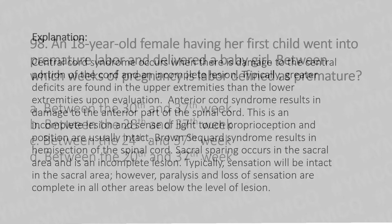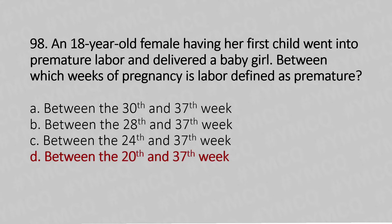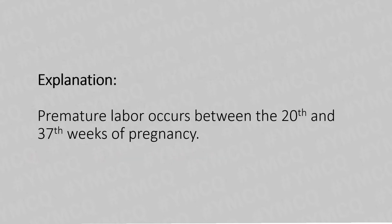Now let's move to our 98th question. An 18-year-old female having her first child went into premature labor and delivered a baby girl. Between which week of pregnancy is labor defined as premature? Option A: between the 36th and 37th week. Option B: between the 28th and 37th week. Option C: between the 24th and 37th week. Option D: between the 28th and 37th week. The answer is Option D — premature labor occurs between the 28th and 37th week of pregnancy.